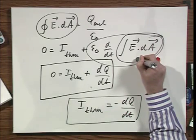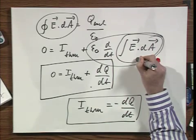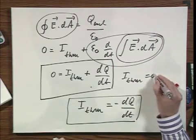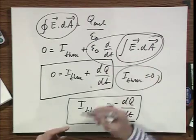we would have found the embarrassing answer, clearly the wrong answer, that I through would be zero. Which is obviously not true.